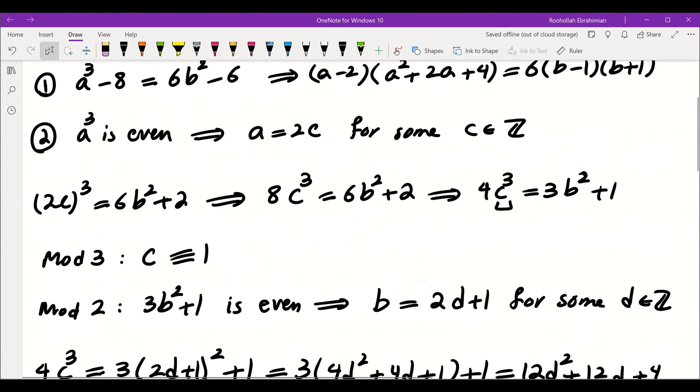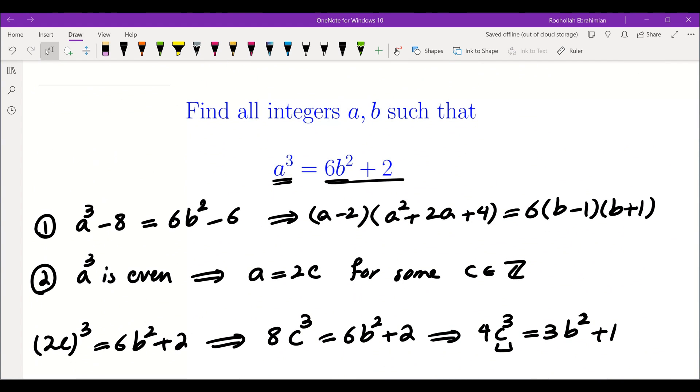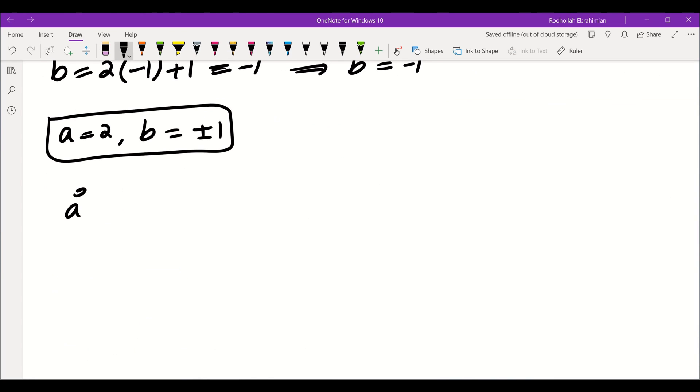Now, after I solve the problem, I looked at the official solution. They have done something similar, but there's a little bit of a shortcut for that. So if you look at the original equation, a cubed equals 6b squared plus 2, there's a way to actually see the sum of cubes from the beginning, which I did not see at the beginning.